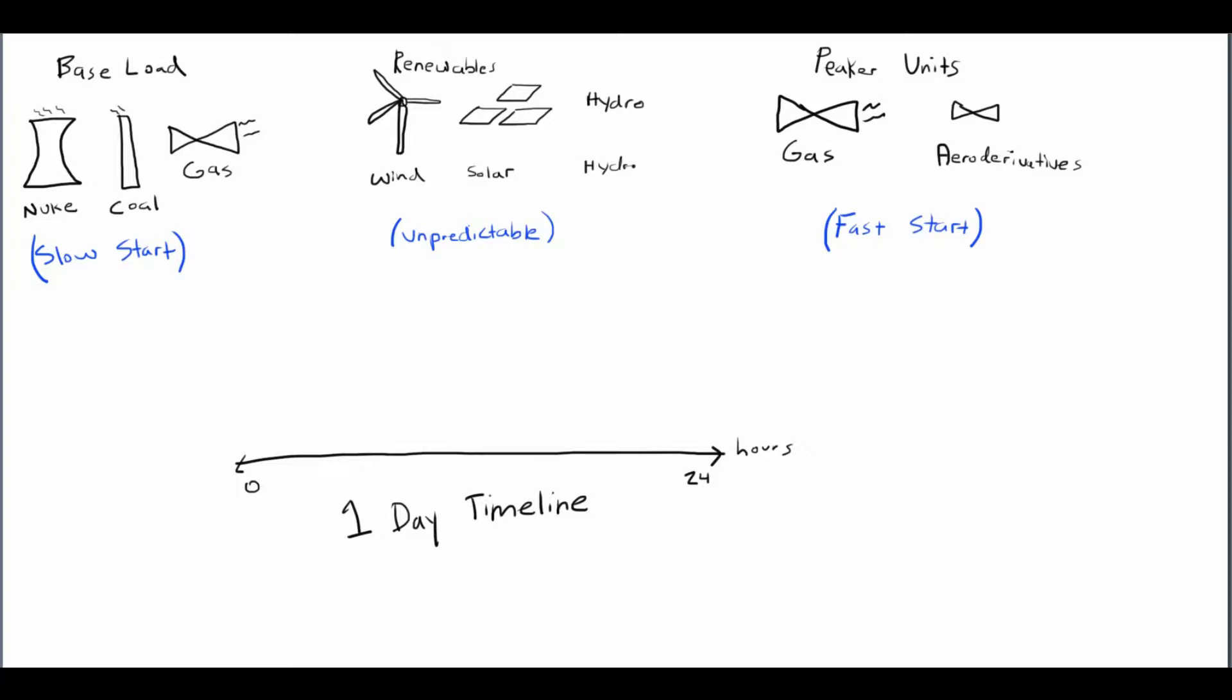The grid is another name for all of the power lines and power plants and houses and everything all connected. It's like one big interconnected web of power. The easiest way to explain it is to explain it in terms of demand versus supply.